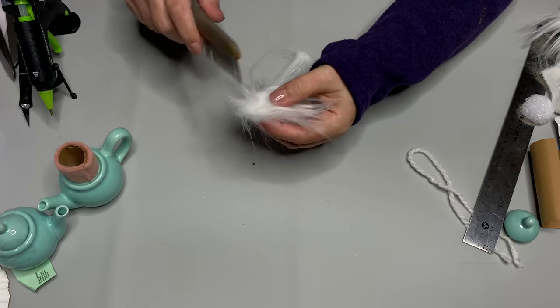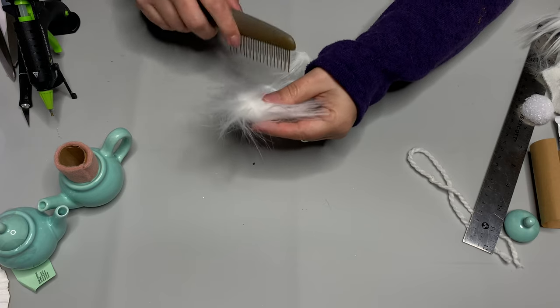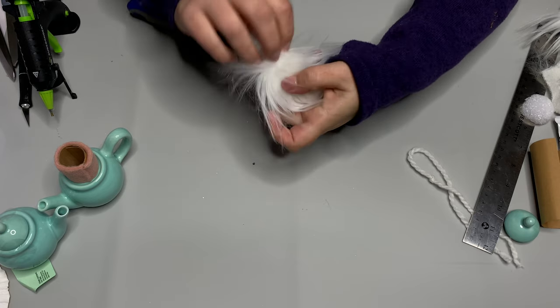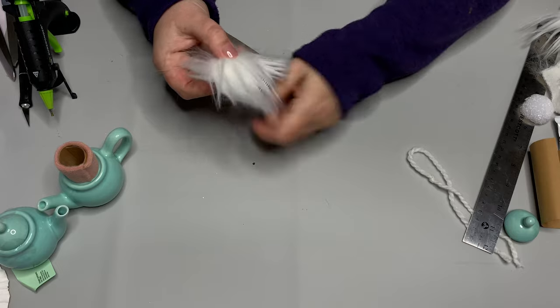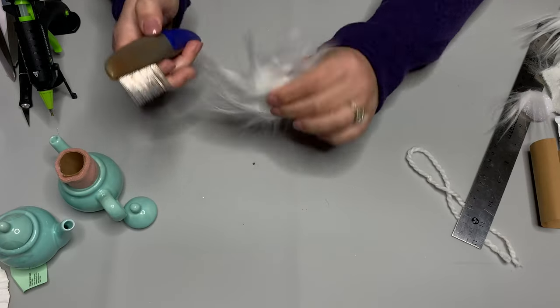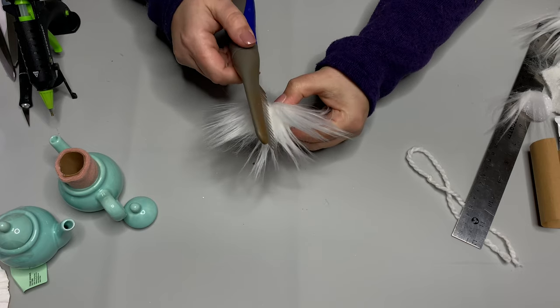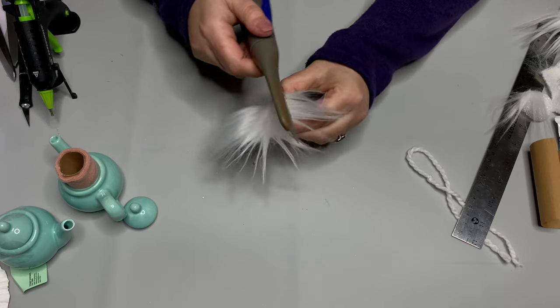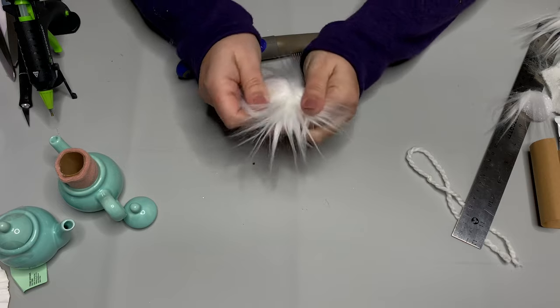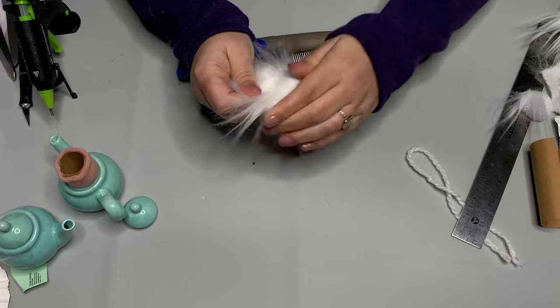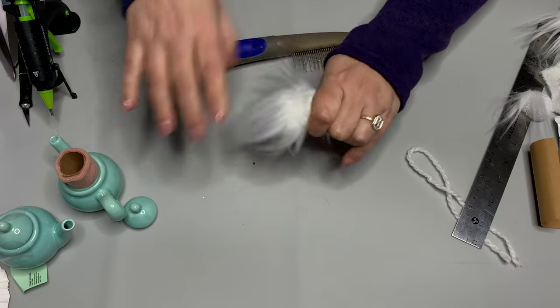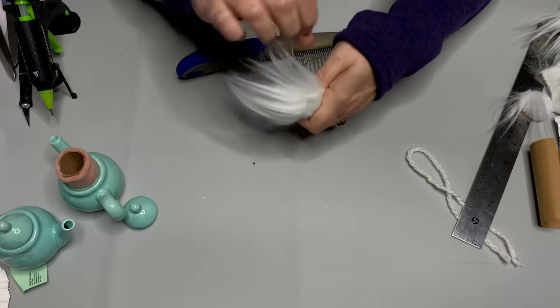So once you have all of your fur, we're just going to part it. Because we're using a square for this it's super easy, you won't have any of the fur fabric backing showing. We're just going to split the fur using anything, a comb, you can use your scissors, whatever. You're just going to split the fur and give it apart just like you would do with your hair.